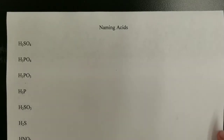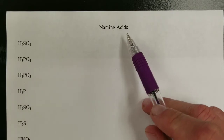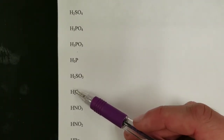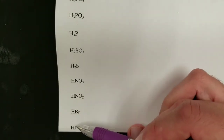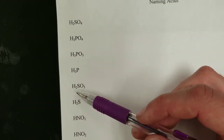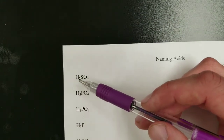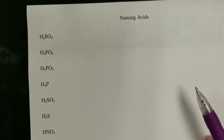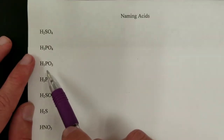Let's talk about how you go about naming acids. The first thing you need to understand is what an acid is. Acids are generally chemical formulas that start with an H and do not have a net charge. How you name them depends on the structure of the acid.